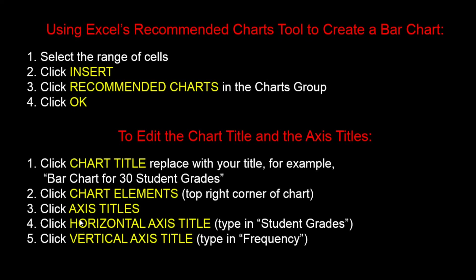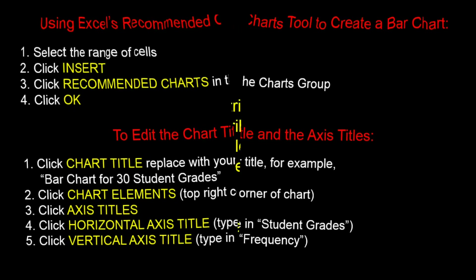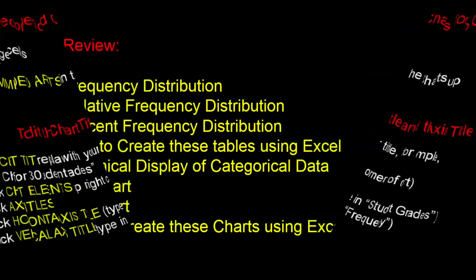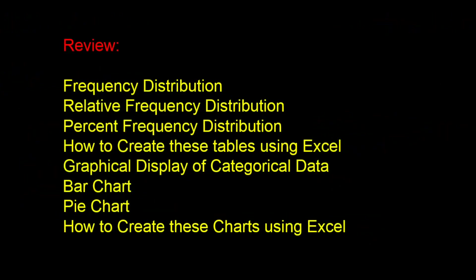This concludes the video on presenting categorical data using tables and charts. Let's take a look at what we learned. First, we learned how to summarize data using a frequency distribution. Then we discussed changing frequency counts to proportions or percentages using a relative frequency distribution, and saw how that can easily be done using Excel. Finally, we discussed presenting data using graphs and looked at the two most commonly used graphs: a bar chart and a pie chart, which were also demonstrated in Excel. Remember, what we learned here applies to categorical data — data that is not numerical. In the next video, we'll discuss quantitative, numerical data.